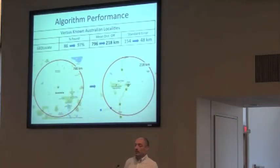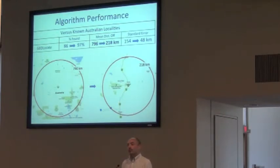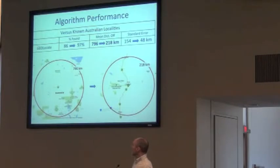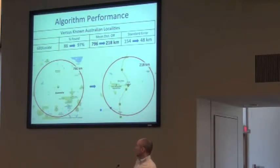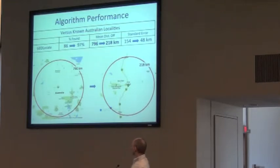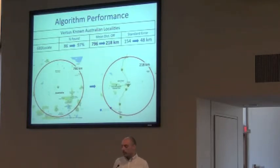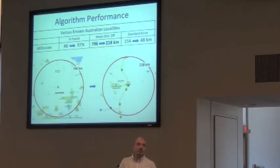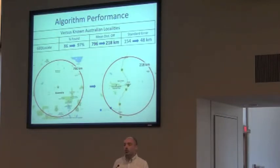If we look at the algorithm performance for outside the U.S., it's not as nice a picture. Looking at some Australian data that was also hand-georeferenced, before we upgraded some of the data that Geolocate is using, we were able to georeference about 86% of the data but were almost 800 kilometers off. As you can see in the first map on your left, that's a huge area to scan. The one on the right is only 218 kilometers off, and that difference is because we had upgraded some of the core gazetteers. Anytime people find Geolocate isn't working well for a particular area and let us know, we can sometimes incorporate that data into Geolocate to make it more accurate.